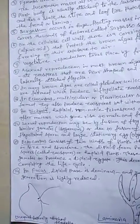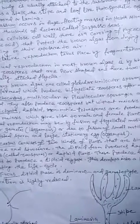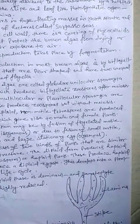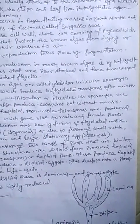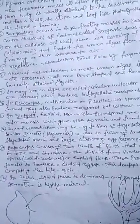In Fucus, the diploid phase is dominant and the gametophytic generation is highly reduced.